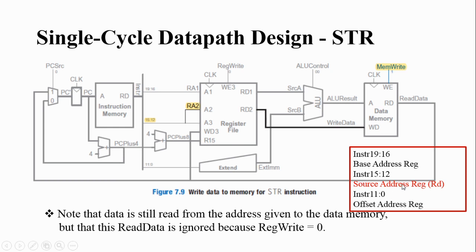In the store operation you need to read the content of a register known as the source register. For the read operation, the source register is configured using these four bits. The first read port A1 is connected to bits 16 to 19 for reading the base address. You connect bit number 12 to 15 to the A2 port of the register file. By configuring a register — say R2 — through these four bits, the content of that register will be sent out through the RD2 output.